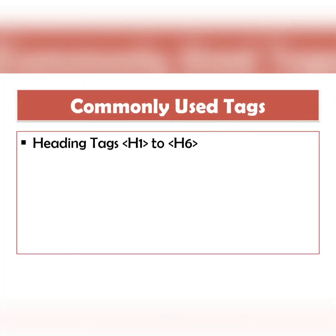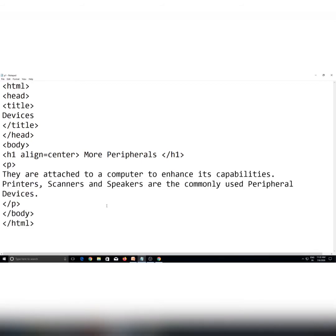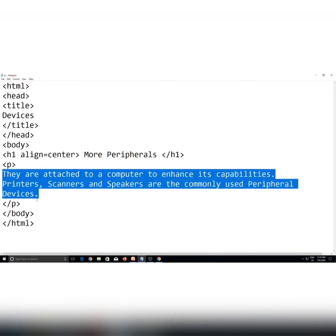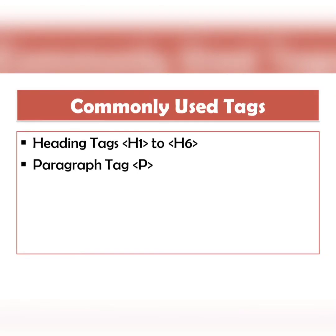You can clearly see the difference in the output. The next tag is the paragraph tag. Iski madad se aap apne webpage par ek paragraph design kar sakte hain. Suppose mujhe is heading ke baad paragraph chahiye, to maine p tag open kiya aur pura paragraph likh diya, phir p tag close kar diya. I can see ki heading ke just baad mera paragraph aa gaya hai. Paragraph tag ke saath bhi hum align attribute use kar sakte hain, taaki paragraph ko left, right, ya center mein align kar sakein.